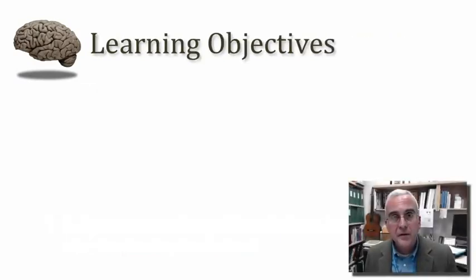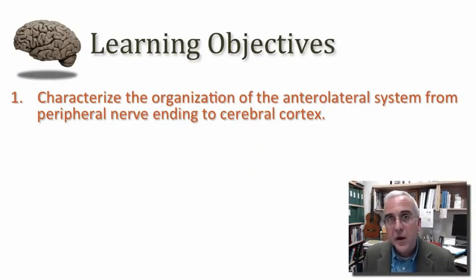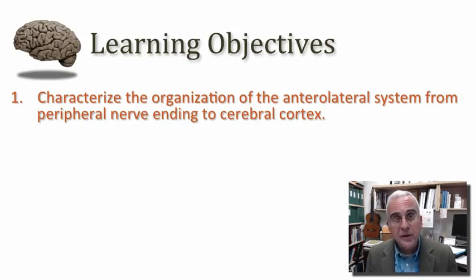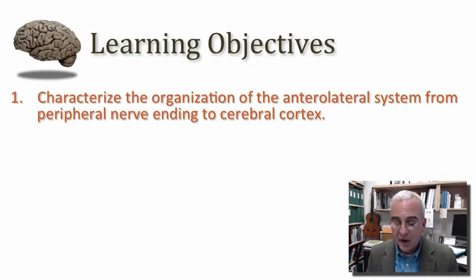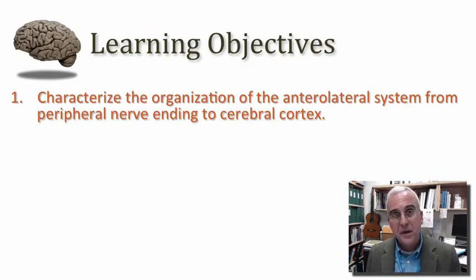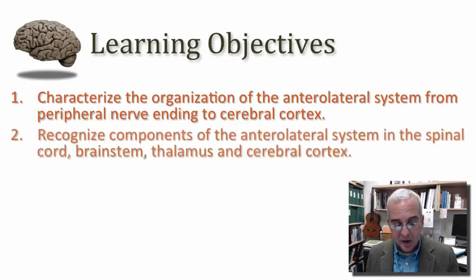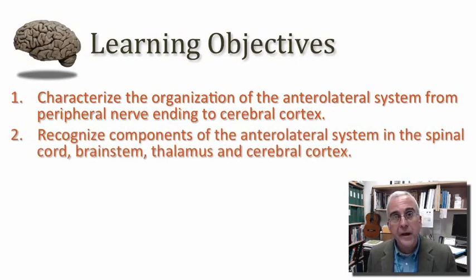With that context established, our learning objectives are to characterize verbally, pictorially, and to recognize visually. We're going to characterize the organization of our pain pathways. An important pain pathway is called the anterolateral system. This allows us to talk about the transmission of pain from a peripheral nerve right on up to the cerebral cortex. I want you to be able to recognize what the components of this pathway actually look like in cross-sections through the nervous system.